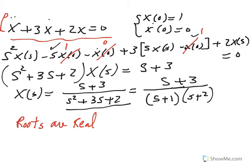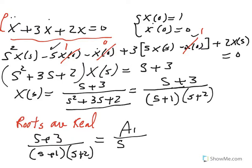Let's go ahead and solve this. How do we do that? We've got to do a partial fraction. In other words, this s plus 3 over s plus 1 times s plus 2 can be written as a1 over s plus 1 plus a2 over s plus 2.